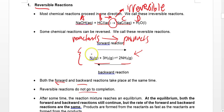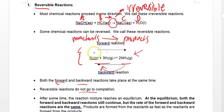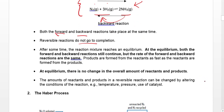Importantly, both reactions take place at the same time, so they do not go to completion. I cannot say that all my N2 and hydrogen will react to give me ammonia, full stop, because when ammonia is formed, the backward reaction instantly begins and ammonia starts to break down back into nitrogen and hydrogen.